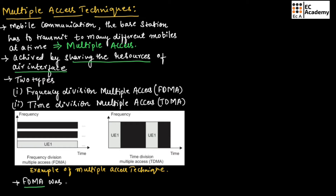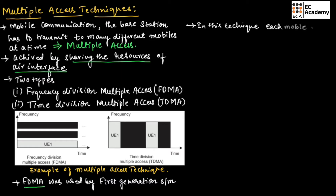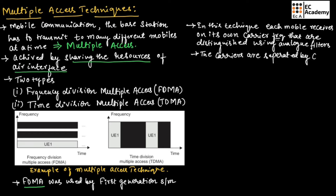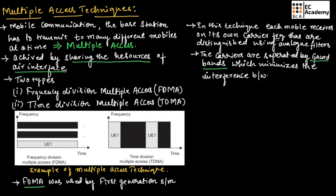FDMA was used by first generation systems. In this technique, each mobile receives on its own carrier frequency, and the carriers are distinguished from each other using analog filters. The carriers are separated by guard bands, which minimizes the interference between the carrier frequencies.